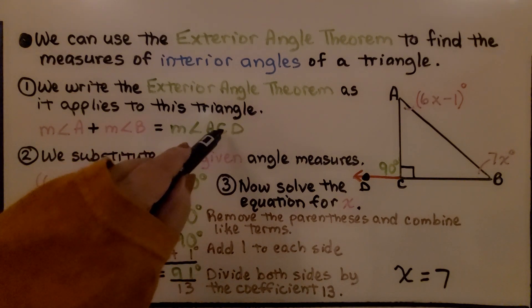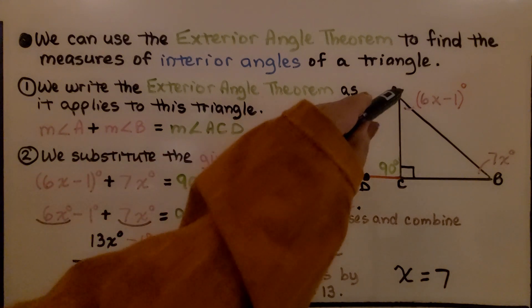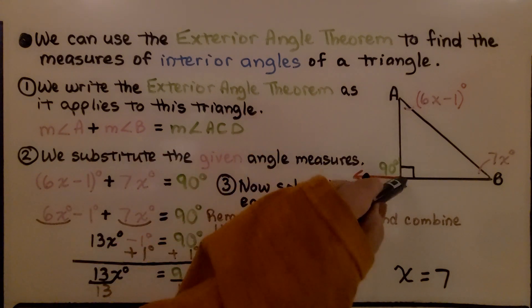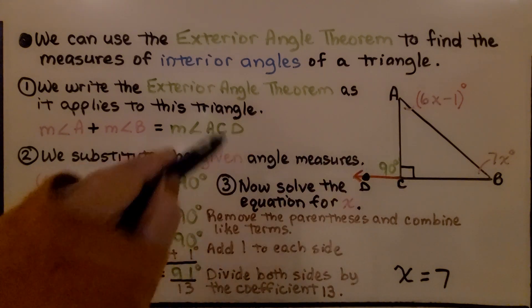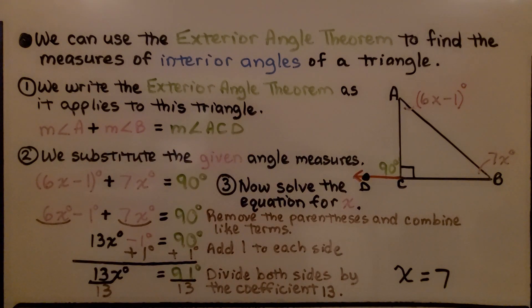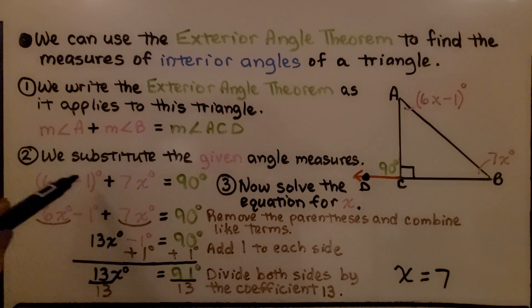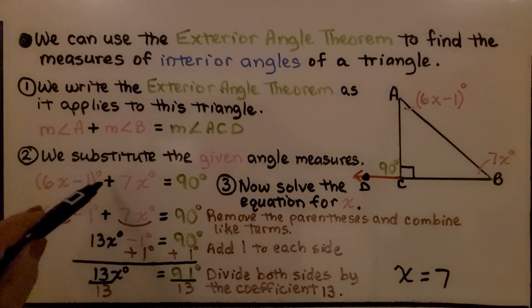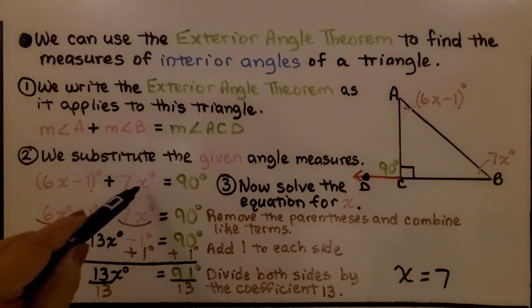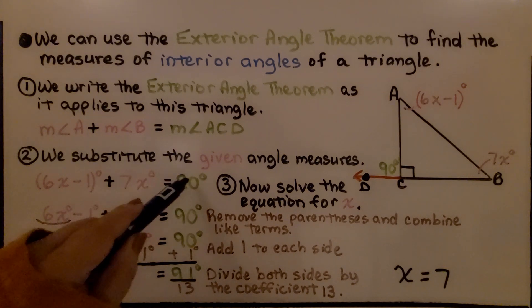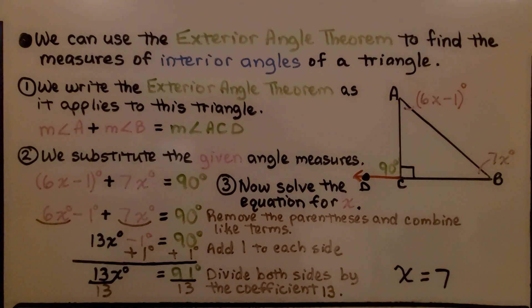Remember, the middle letter is the vertex. We have angle ACD, which is 90 degrees. We substitute the given angle measures: 6x minus 1 degrees plus 7x degrees is equal to 90 degrees.